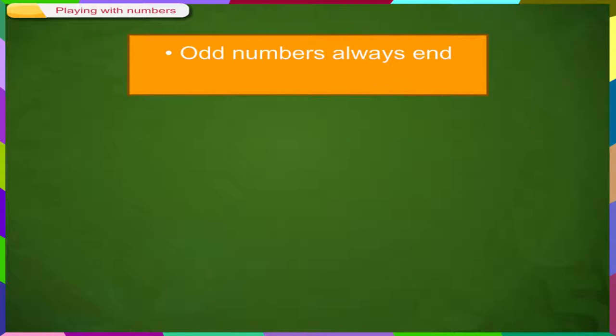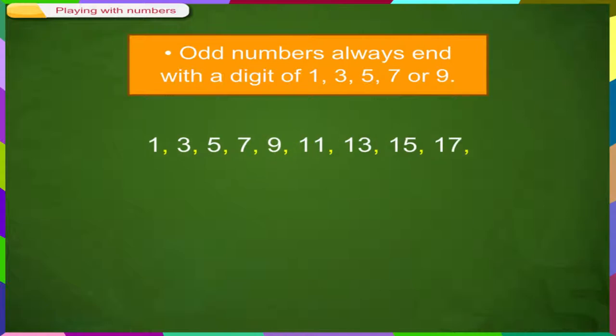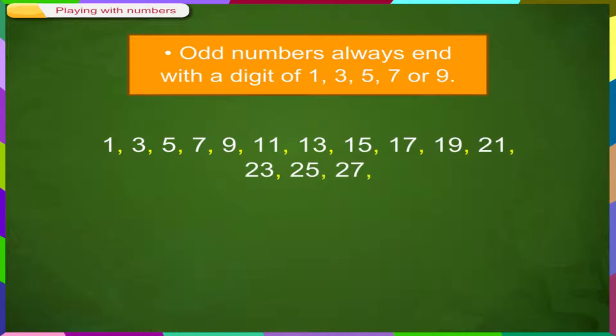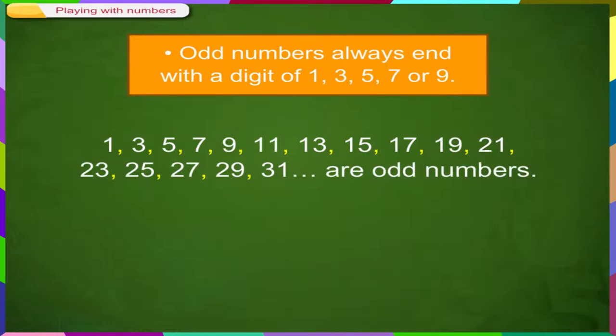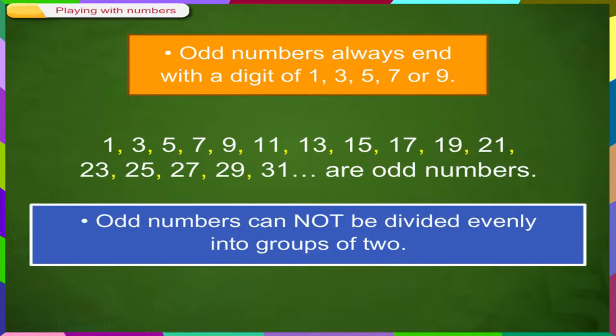Odd numbers always end with a digit of 1, 3, 5, 7 or 9. For example, 1, 3, 5, 7, 9, 11, 13, 15, 17, 19, 21, 23, 25, 27, 29, 31 and so on are odd numbers. Odd numbers cannot be divided evenly into groups of 2.